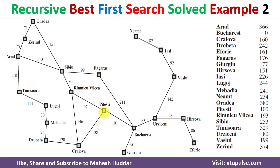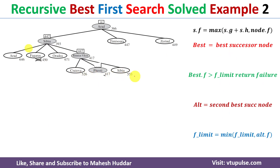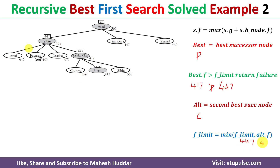We calculate f values for Sibiu, Craiova, and Pitesti as successors of Rimnicu Vilcea. The best node is Pitesti with f = 417. The current f_limit is 447; 417 is not greater than 447, so no failure. The alternate is Craiova with f = 526. New f_limit = min(447, 526) = 447. The best node is Pitesti.